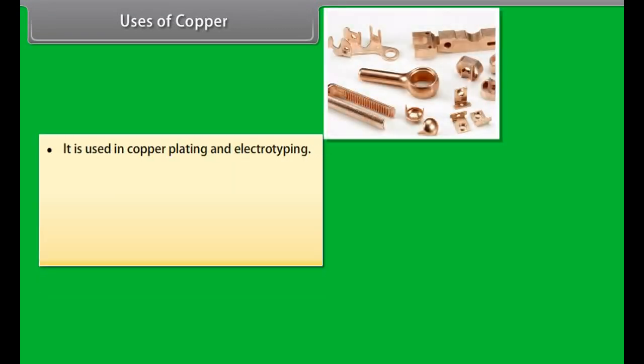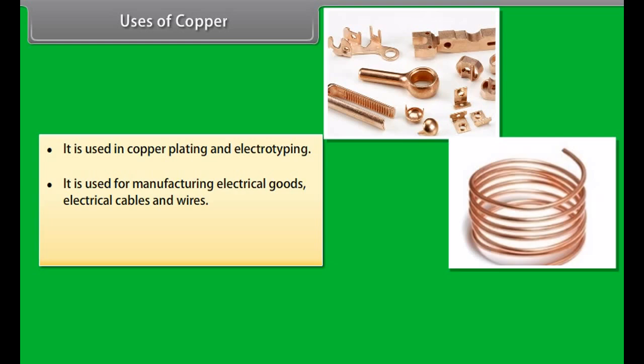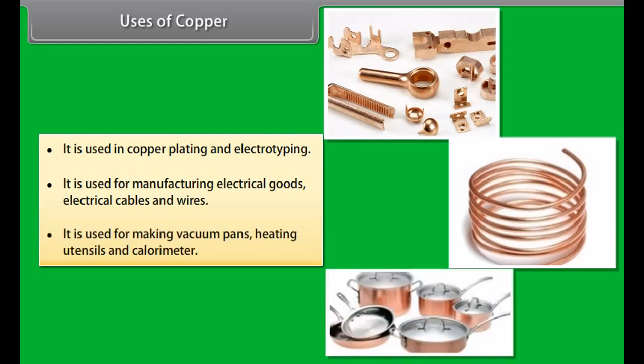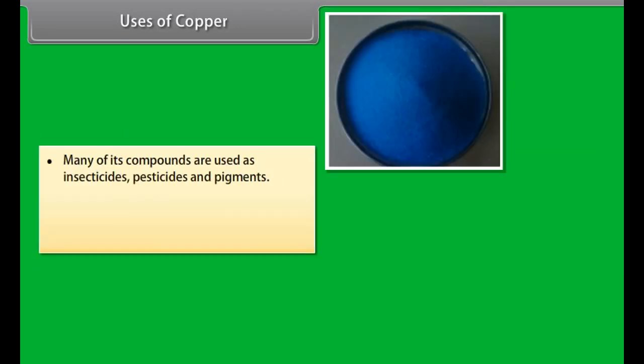Electrolytic refining: In this method, impure metal is taken as anode, pure metal as cathode. Soluble salt of same metal is used as electrolyte. When electric current is passed, impure metal forms metal ions which are discharged at the cathode forming pure metal. For example, copper, zinc and aluminium.